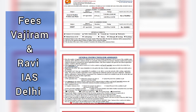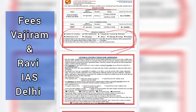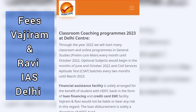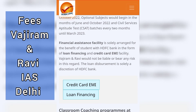These are the optional subjects which are being taught at Wajiram and Ravi coaching institute. This is also very important information, as many students have the query about what optional subjects are taught at Wajiram and Ravi. You can also see what is there in the course curriculum of the classroom program at Wajiram and Ravi.